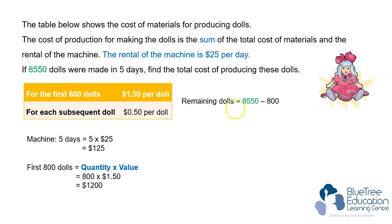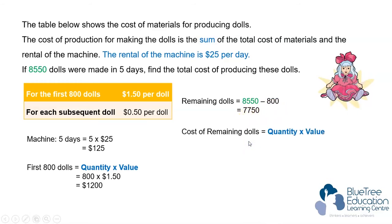The remaining dolls is found by taking the total 8,550 and subtracting the first 800, giving 7,750 dolls made at the price of $0.50 per doll. It costs $3,875 to produce this second batch of dolls.